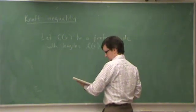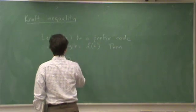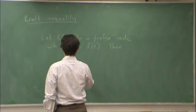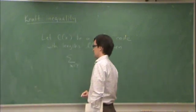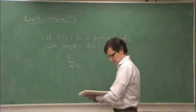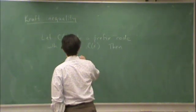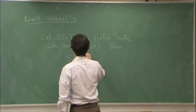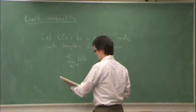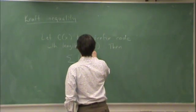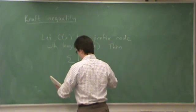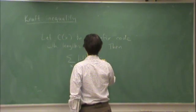Then the code word lengths must satisfy the sum over all the code words, the sum over all possible source letters, the cardinality of the channel alphabet to the minus L(X) is less than or equal to 1.